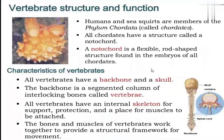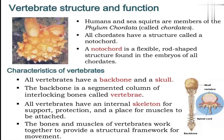Vertebrate structure and function: humans and sea creatures are members of phylum Chordata. Chordata has a notochord — a flexible rod structure. The characteristics of vertebrates include a backbone and skull. The backbone is actually segmented with interlocking bones called vertebrae, forming the vertebral column made of individual units.